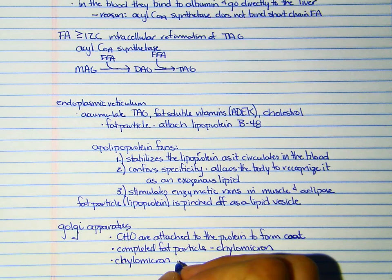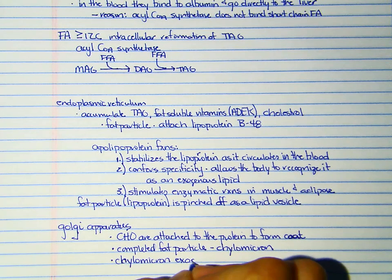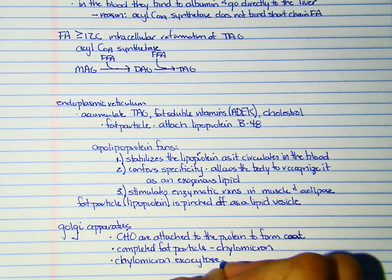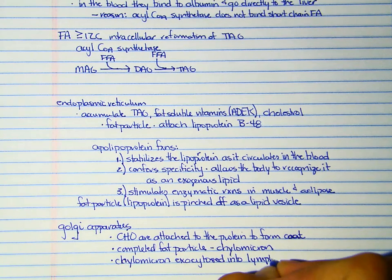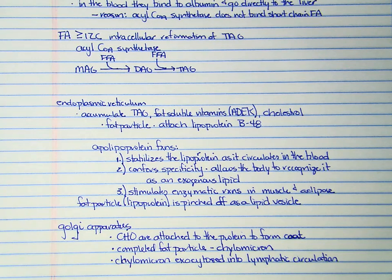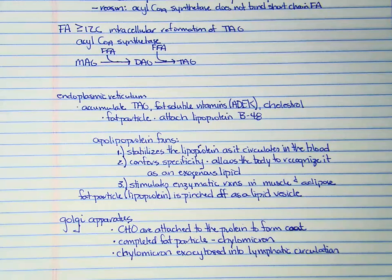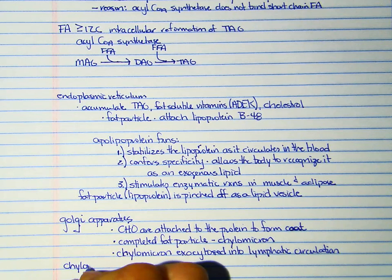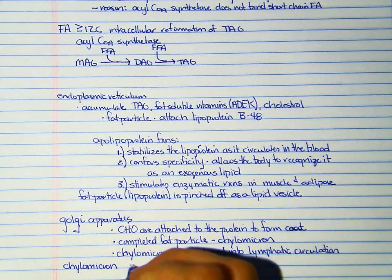And so the chylomicron is exocytosed into lymphatic circulation. And so this comes back to way back at the very beginning of class we talked about each villus has a central lacteal and so this is where that plays in. We're going to put the chylomicron into that central lacteal and then it's going to move into lymphatic circulation.